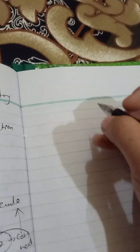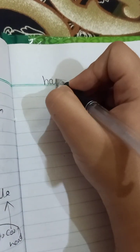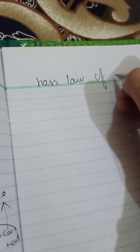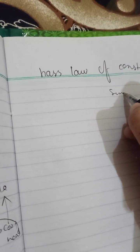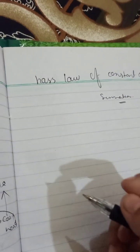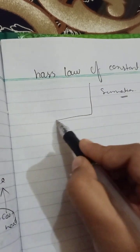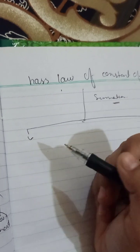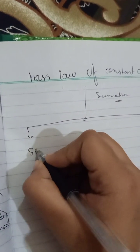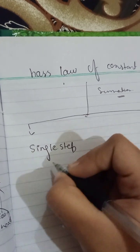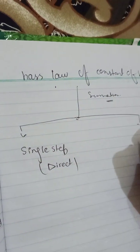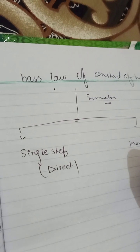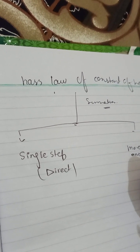In this video I'm going to discuss Hess's law of constant heat summation. This law is related to compound products. Remember, the product is obtained by two methods. The first is a direct method, and the second is more than one method. So first is a single step method which is direct, and second is more than one method, which you can say is indirect.